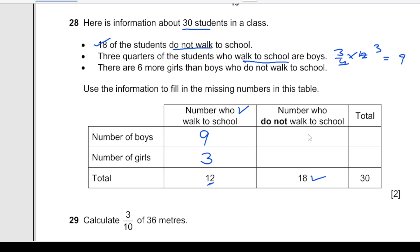For the number who do not walk to school, there are 6 more girls than boys who do not walk to school. If the number of boys is x, then the number of girls will be x plus 6.